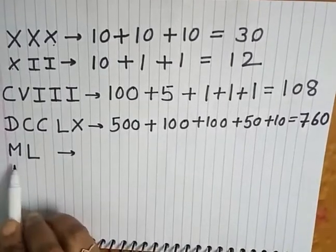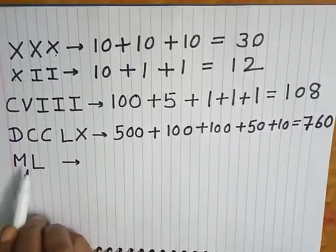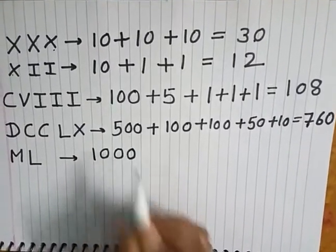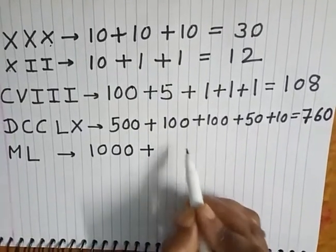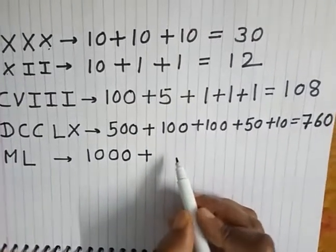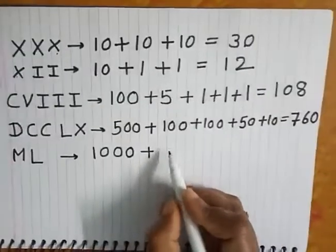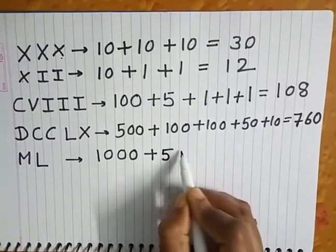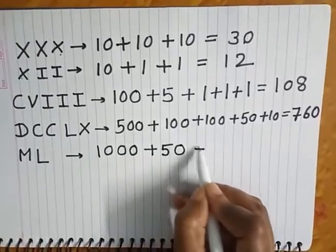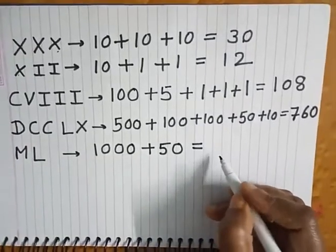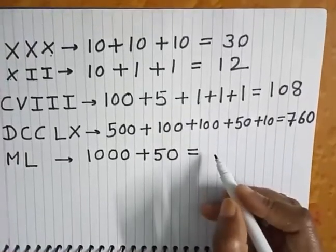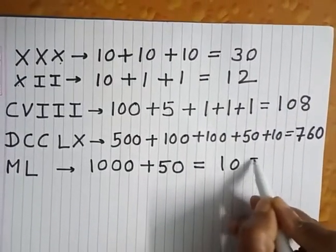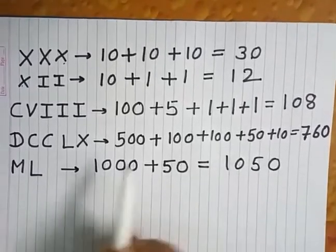Next number is ML. The value of M is 1000, and we add L, which means 50. So ML equals 1000 plus 50, which is 1050. This is how we write numbers using the addition rule.